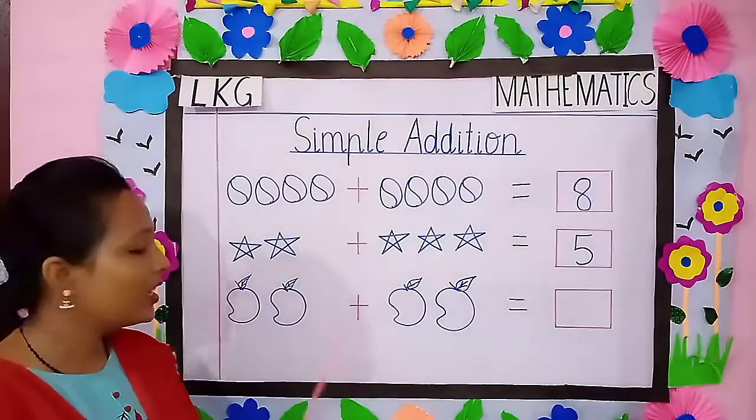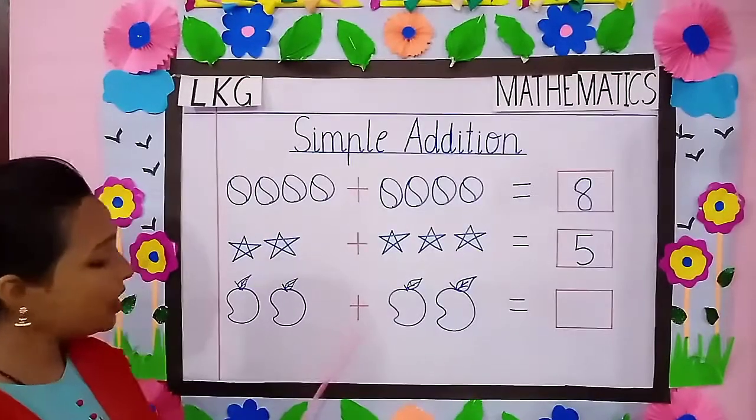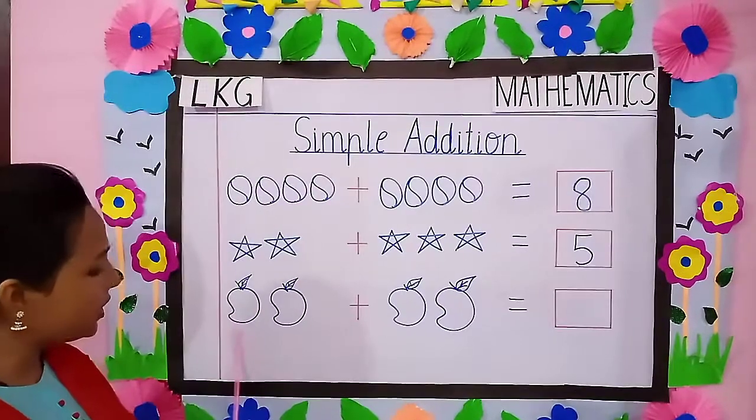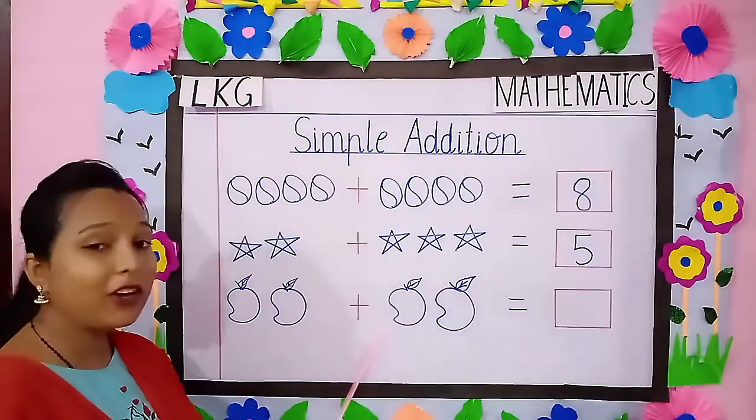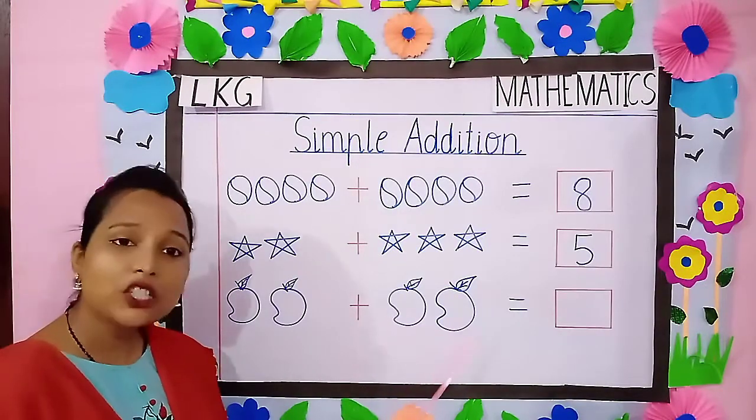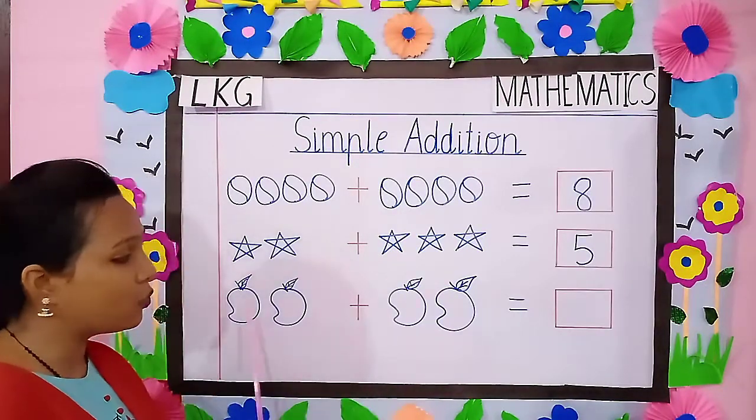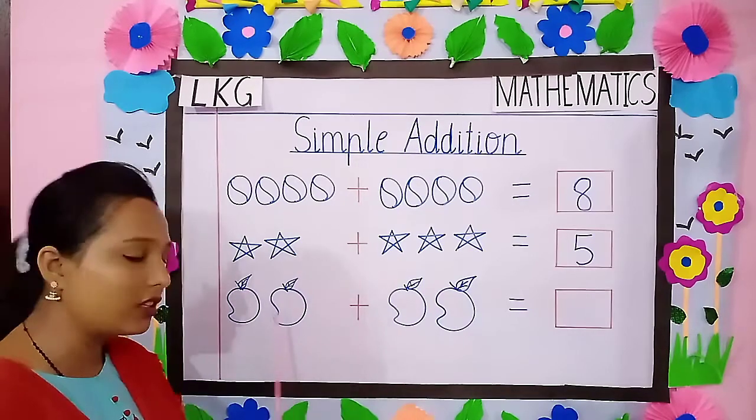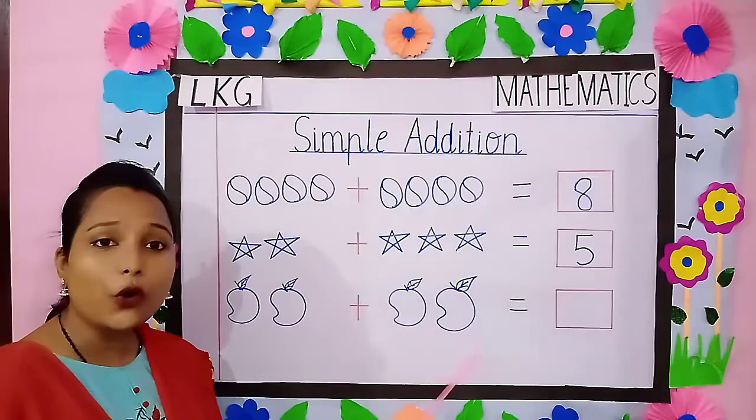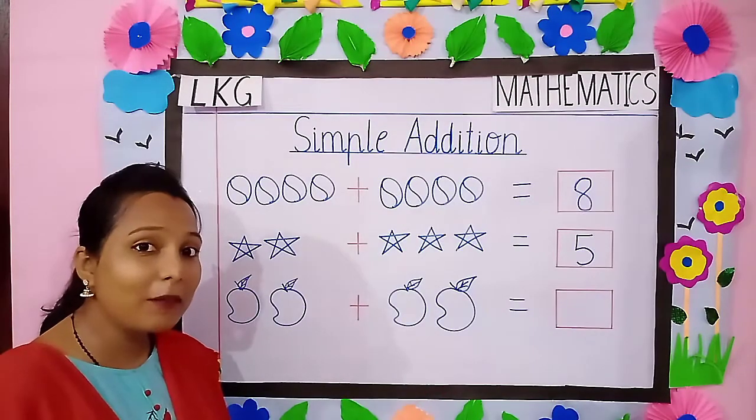Now we move on to the next object. How many mangoes are there before the plus sign, children? 1, 2. How many mangoes are there after the plus sign? 1, 2. Now let us count these mangoes all together. 1, 2, 3, 4. Where shall we write number 4, children?